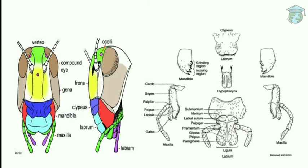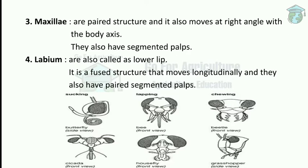The third mouth part is the maxilla. Maxillae are paired structures — in plural they are called maxillae. They also move at right angles to the body axis and have segmented palps. The fourth part is the labium, which is the lower lip. It moves longitudinally to the body axis, also has segmented palps, and is a paired structure.